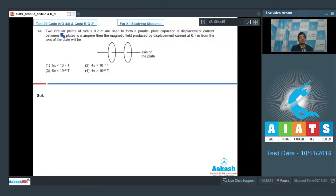Two circular plates of radius 0.2 meters are used to form a parallel plate capacitor. If displacement current between the plates is π amperes, then the magnetic field produced by displacement current at 0.1 meters from the axis of the plate will be. We can write down Ampere's law: closed integral of B·dl = μ0×I. Here I is π amperes, but we have to find the current enclosed within 0.1 meter radius only.